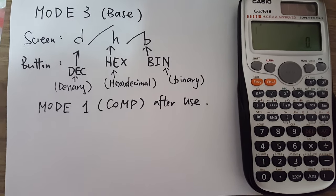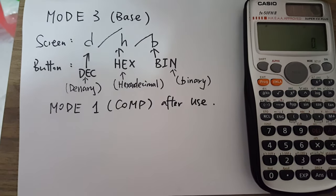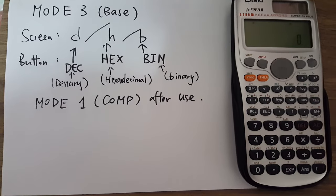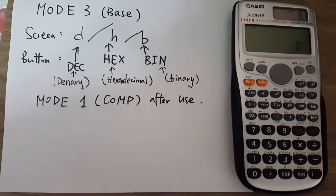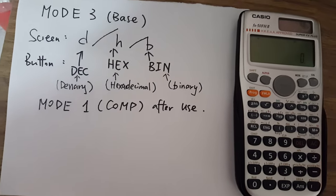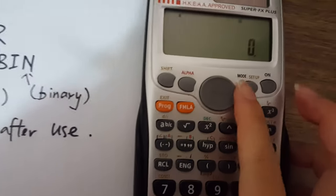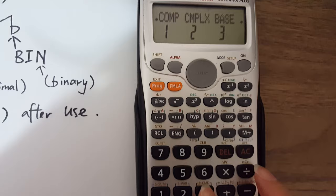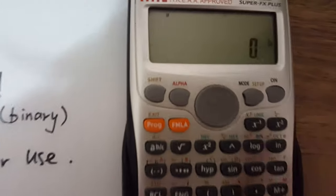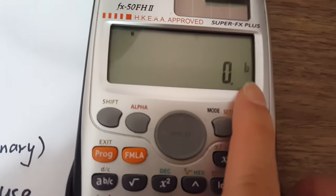In this video, I'm going to teach you how to use your calculator for number system questions. First of all, you have to press MODE 3 to change it to the number system. So MODE 3, and your calculator will show a letter.